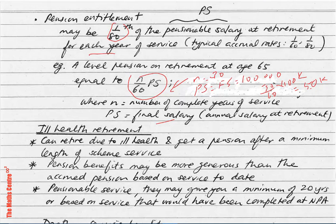Next, let's talk about ill health retirement. You can retire due to ill health and get a pension after a minimum length of scheme service. The pension benefits may be more generous than the accrued pension based on service to date — for example, they may give you a minimum of 20 years for pensionable service, or base it on service that would have been completed at normal pension age.